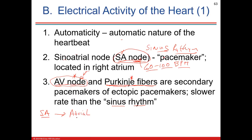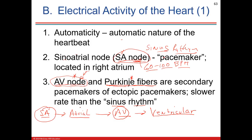The sequence is: SA node depolarization and action potential, then atrial cells depolarize and action potential, then AV node action potential, then ventricular Purkinje cells. Every one of these areas has automaticity. This leads to what are called ectopic pacemakers. Ectopic means something is occurring where it shouldn't be — like an ectopic pregnancy where implantation happens in the fallopian tube instead of the endometrium. An ectopic focus in the heart is a similar concept.